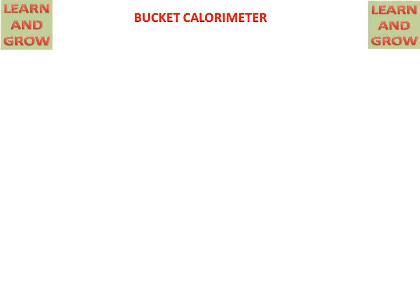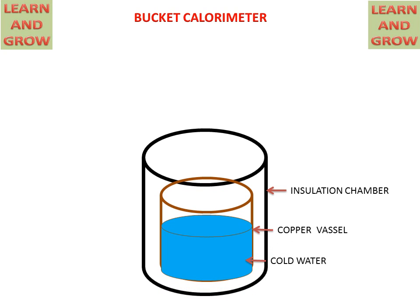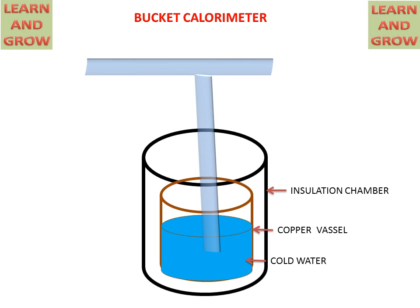Bucket calorimeter. Firstly, we will discuss about all the parts of bucket calorimeter. We have an insulation chamber in which a copper vessel is placed with a known mass of cold water. A pipe is connected to the copper vessel and a control valve is on the pipe for controlling the steam regulation. This is the sampling tube which will supply the steam to the copper vessel or to the bucket calorimeter.